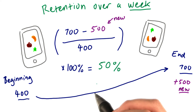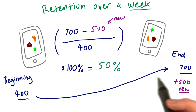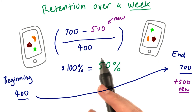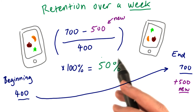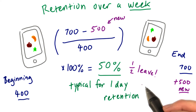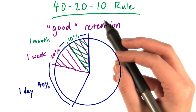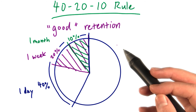Ideally we'd want 100% retention, which means everyone who downloads your game keeps playing it and never quits. But no game has perfect retention, and even really great games have around 50% retention after just the first day — meaning half the players leave during the first 24 hours. This seems like a lot of people leaving, but it's considered pretty good retention, especially if your game is good at getting new players over time. Lots of developers use a 40-20-10 rule as a guideline for good retention over a day, a week, and a month.